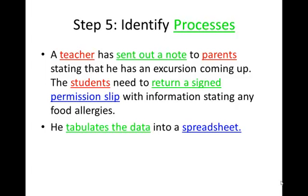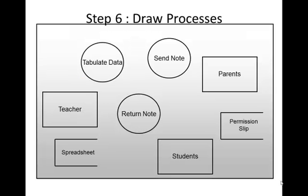Now identify the processes. The teacher has sent a note to parents, the student needs to return a signed permission slip, and we need to tabulate the data. Those are the three processes, and we're going to draw them as circles.